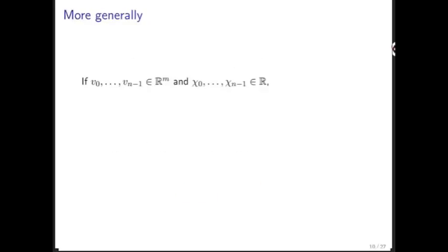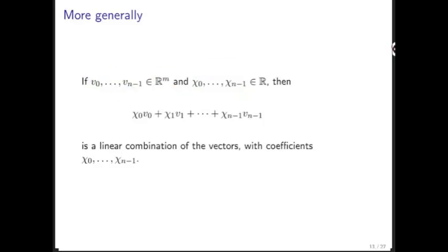More generally, if we're given n vectors of size m and we're given n scalars chi 0 through chi n minus 1, then taking the linear combination of these vectors with these coefficients is given by this expression right here.